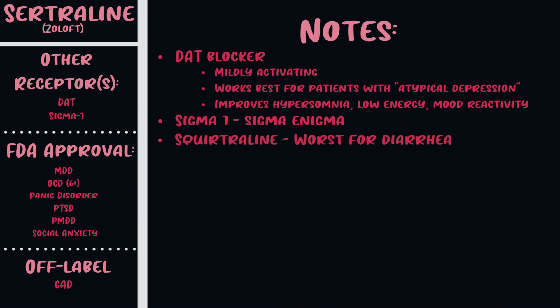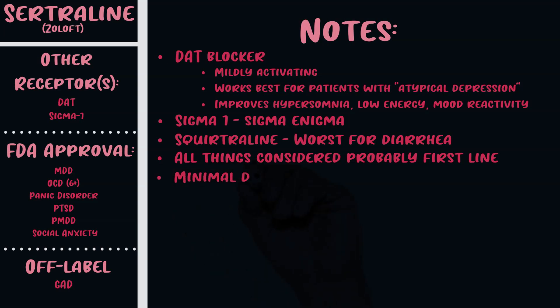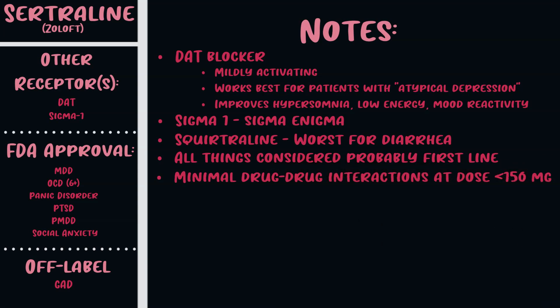In terms of side effects, Zoloft is particularly known for diarrhea and GI side effects — easy to remember by calling it 'scortraline.' All things considered, Lexapro and Zoloft are probably first-line SSRIs for most conditions because they have the best balance of side effects, cost, drug interactions, and efficacy. Zoloft has minimal drug interactions at doses less than 150 mg, but at doses greater than 150 mg it's a moderate inhibitor of CYP2D6.